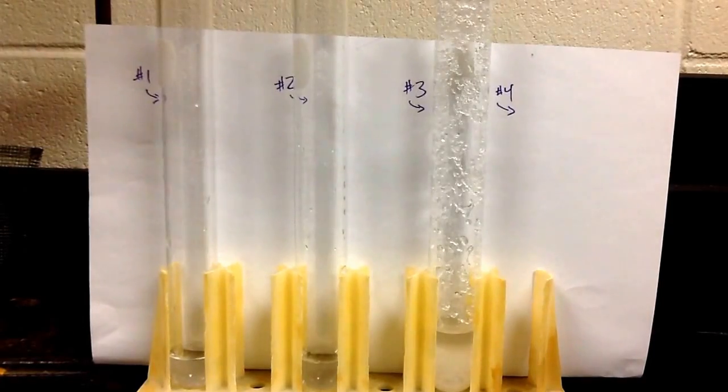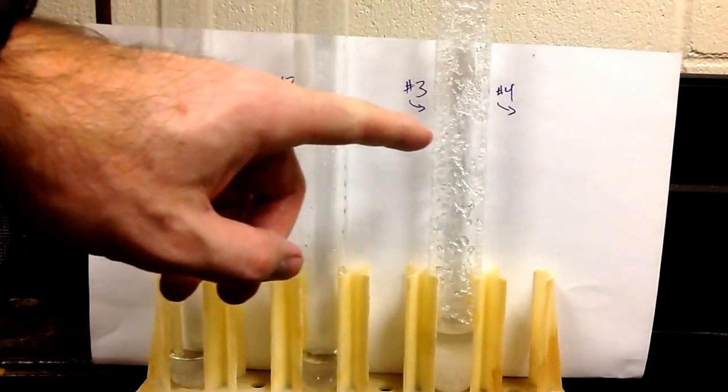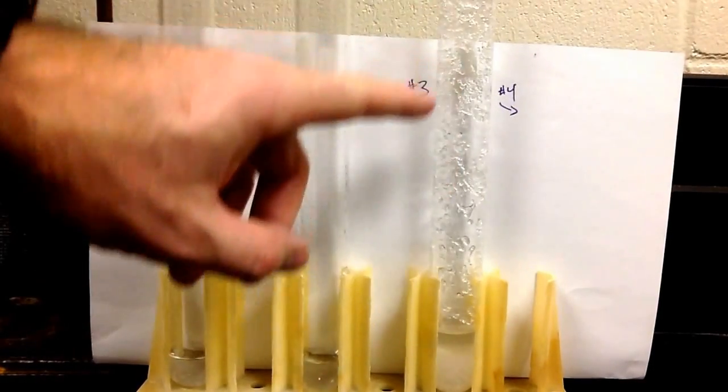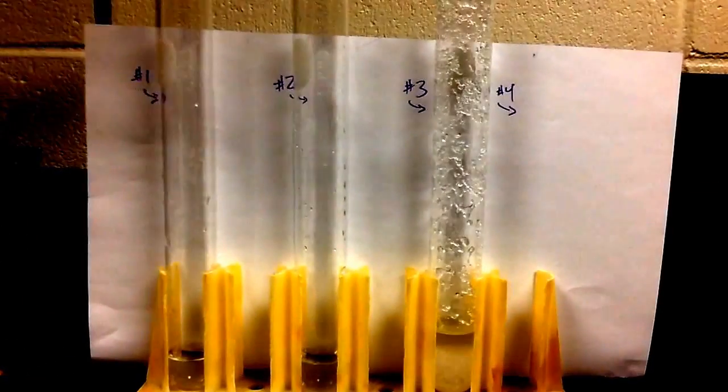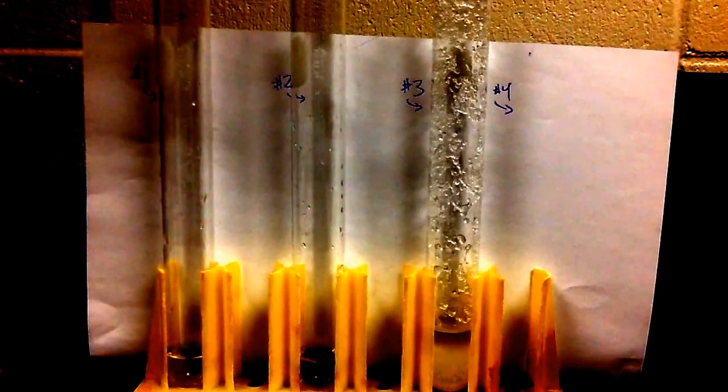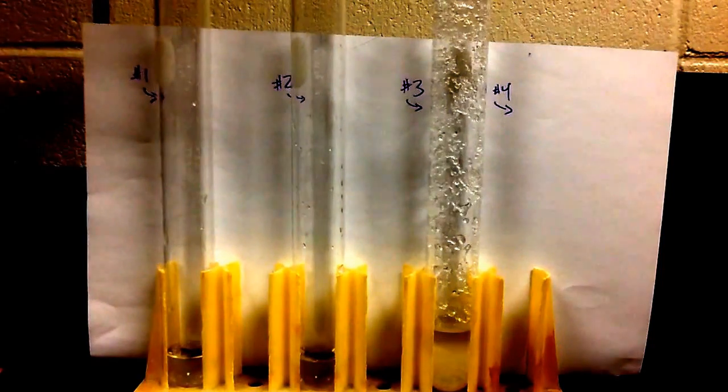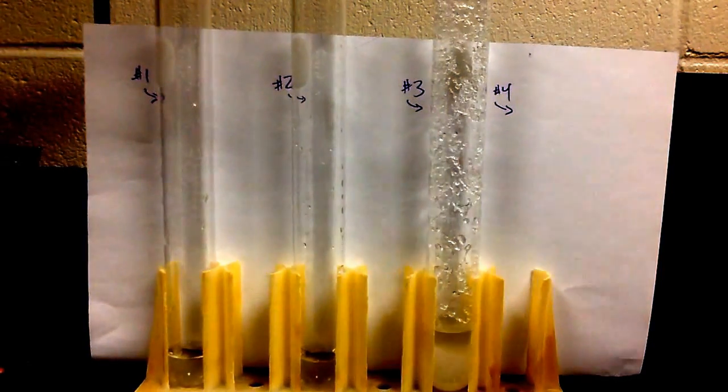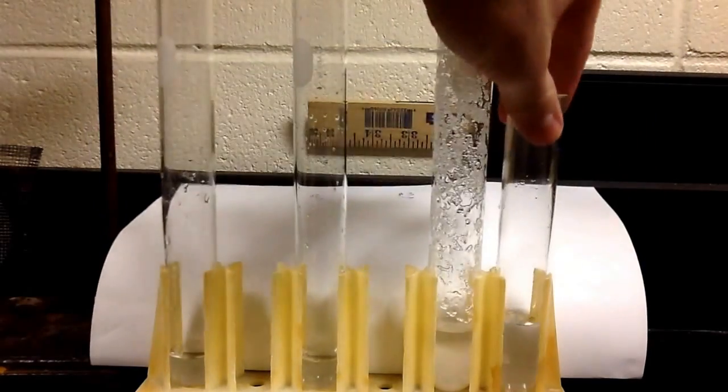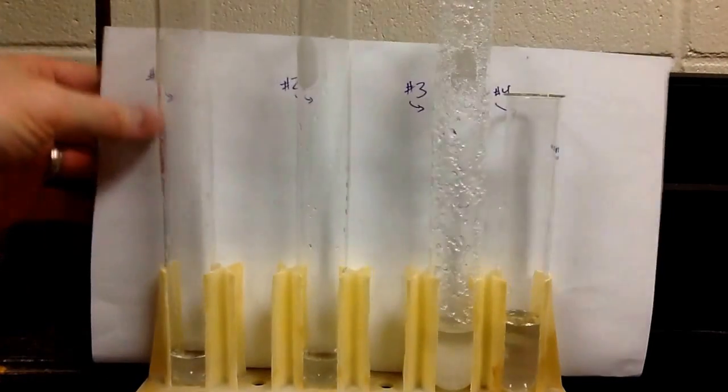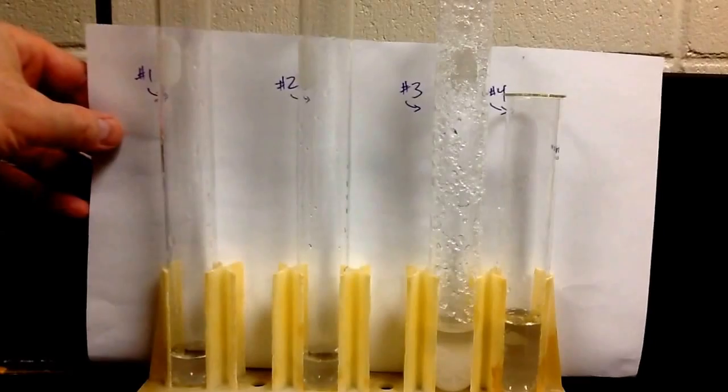We took basically what we have in test tube number three, we heated this up, we got all that solid that's in the neck of the test tube to dissolve, and then we put it in a cold water bath and let it cool down. So for time reasons, I've already done that for us, and I've got this particular test tube here.